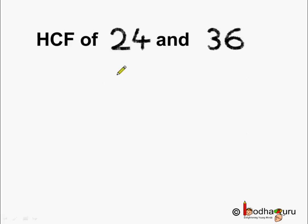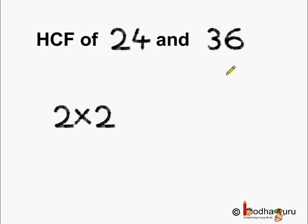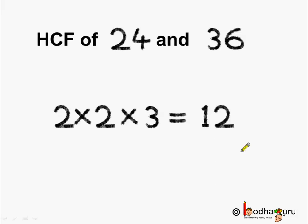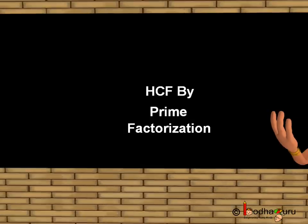So HCF of 24 and 36 is equal to 2 multiplied by 2 multiplied by 3, which are the common factors of both 24 and 36. So this is equal to 12. So HCF of 24 and 36 is 12. And this we found out by using the prime factorization method. Understood? That's all for now. Bye-bye children.